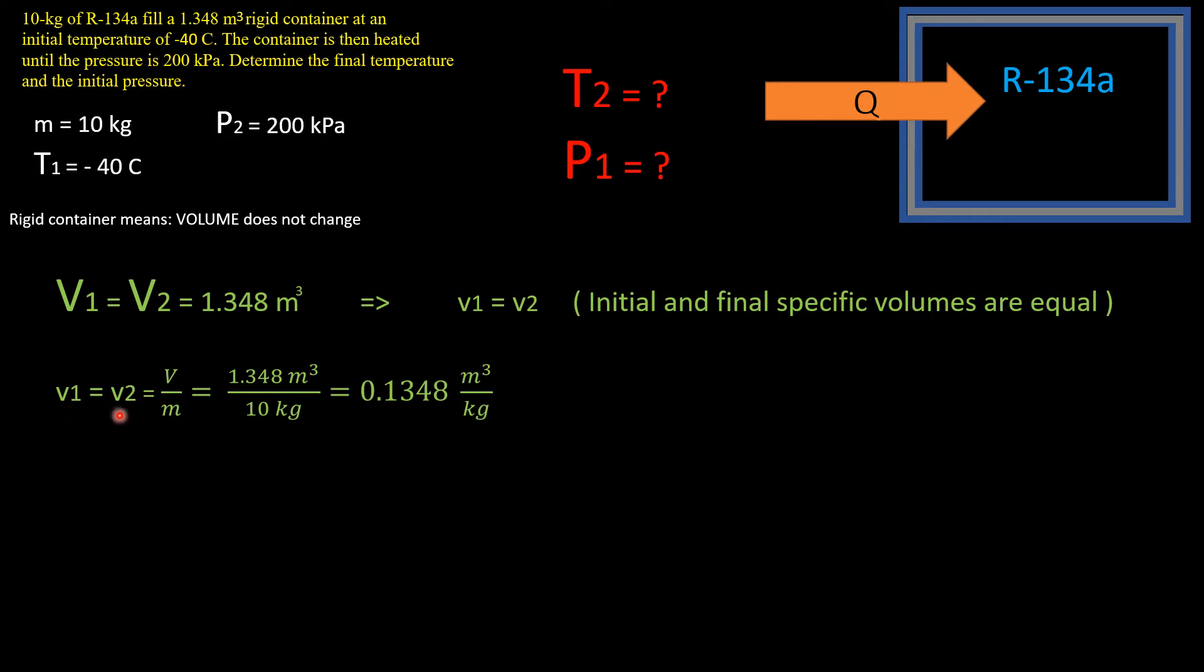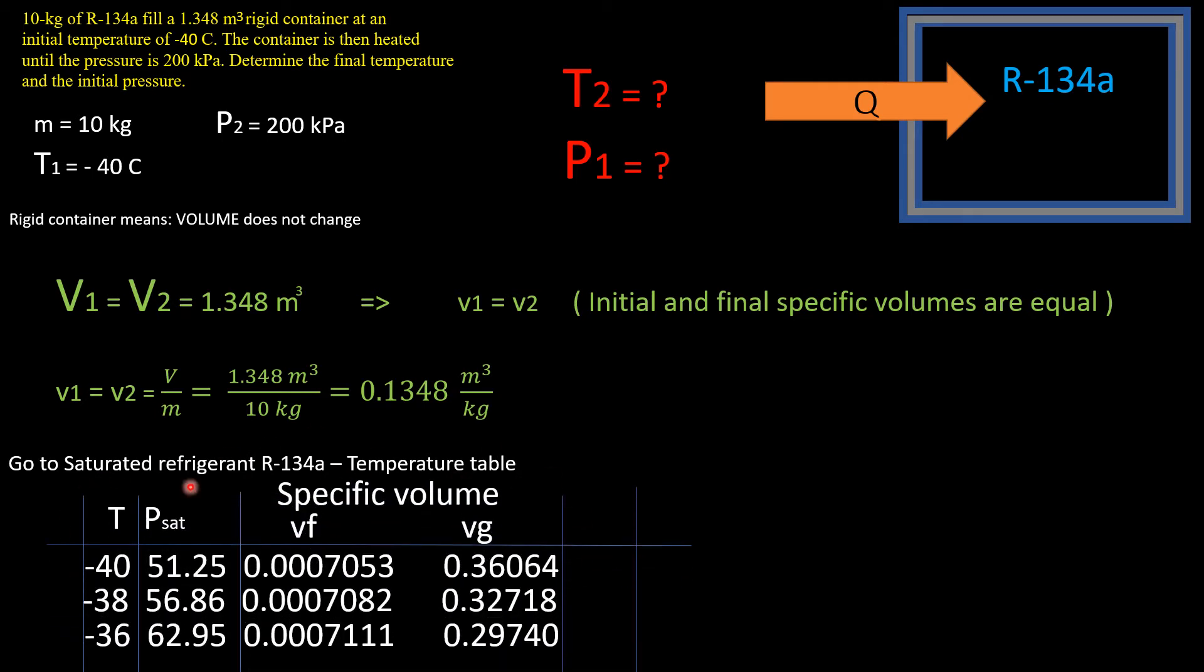Now we need to figure out what kind of state this is in. For that, we're going to go to the saturated refrigerant table, the temperature table. We are interested at T1 equals negative 40 degrees Celsius, so that line would be this one.